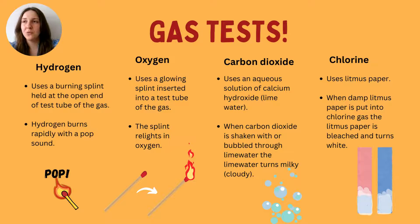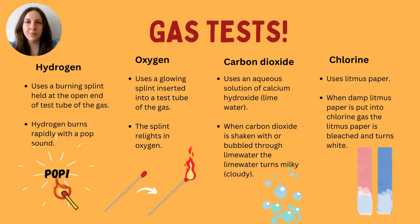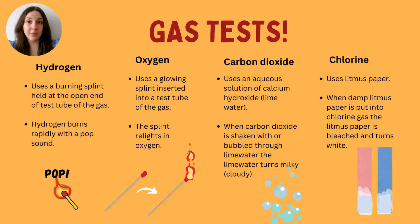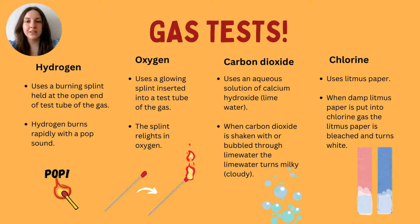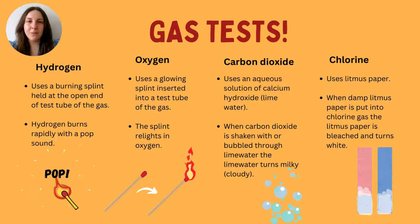A bit of health and safety: if you are testing for gases and you're not sure what the gas is, use a fume cupboard — this is especially important because some gases are quite toxic. Hydrogen is fine but it is flammable, so be very careful. For oxygen, you use a glowing splint and insert it into the test tube containing the gas. If oxygen is present, it should relight the splint.